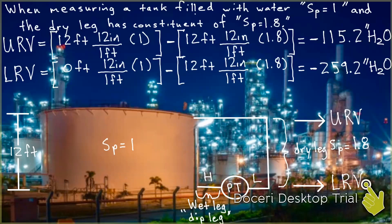And we want to put that all into inches of H2O. So we're going to convert our feet into inches of H2O. So the upper range value is going to end up equaling negative 115.2 inches of H2O.